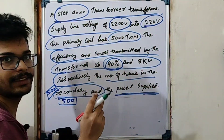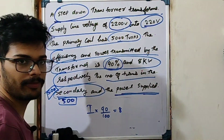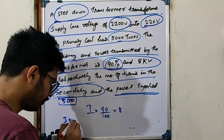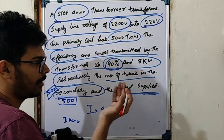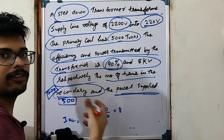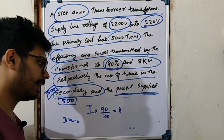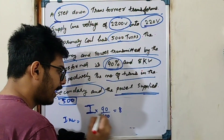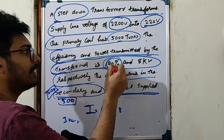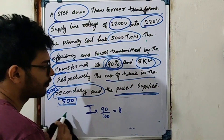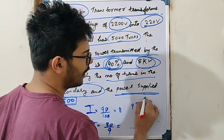The power of the transformer is 90% efficient. Output power is 8 kW. So input power equals output power divided by efficiency: 8 divided by 0.9. Cross multiplying gives input power equals 80 divided by 9, which equals approximately 8.89 kW.